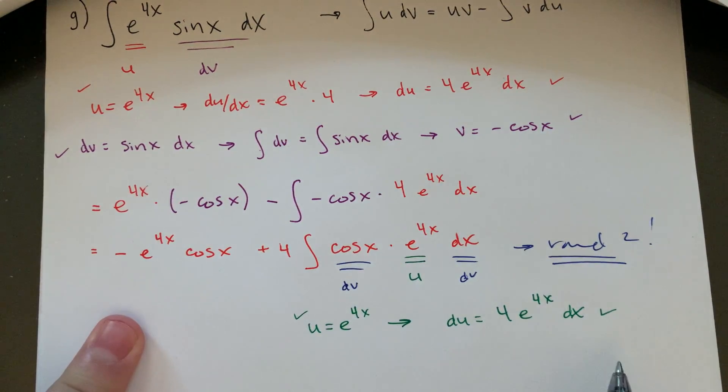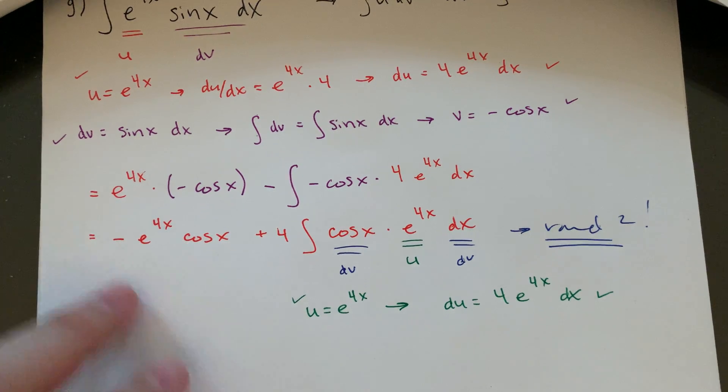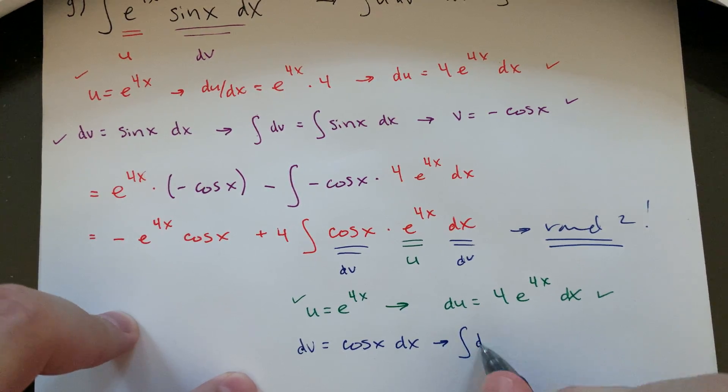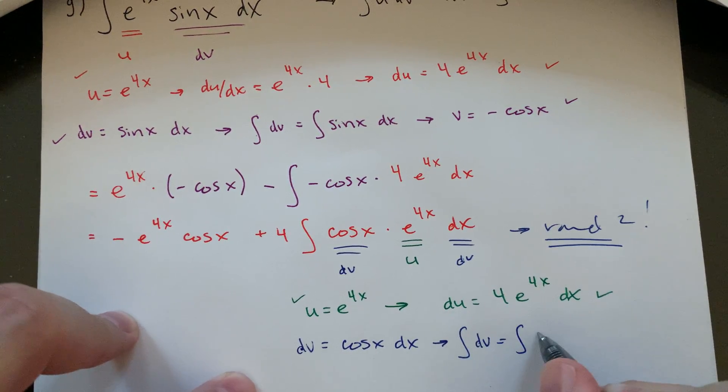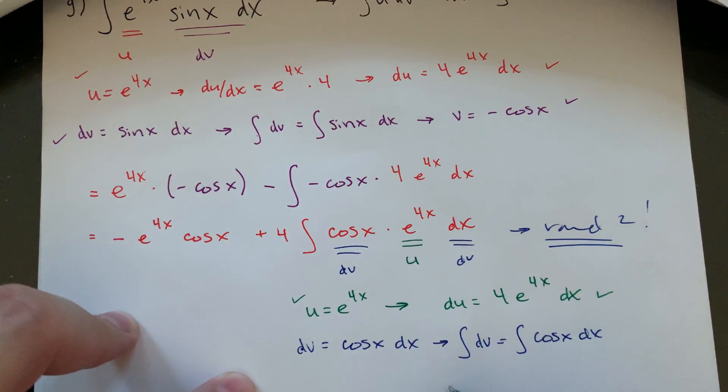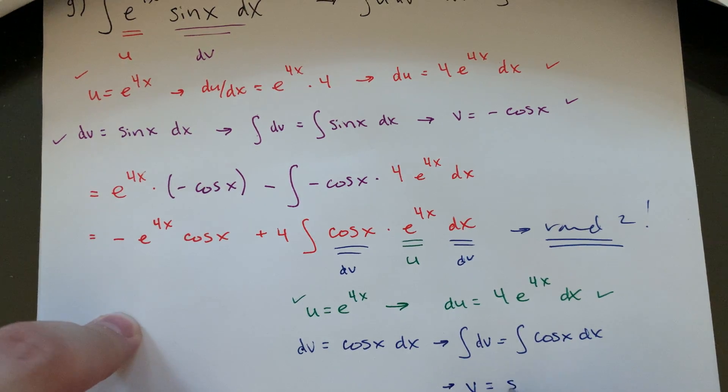I'm kind of repeating myself. dv is going to look pretty similar, cosine x dx. So then my v is the antiderivative. The antiderivative for cosine of x would be positive sine of x. So my v value here is sine of x.